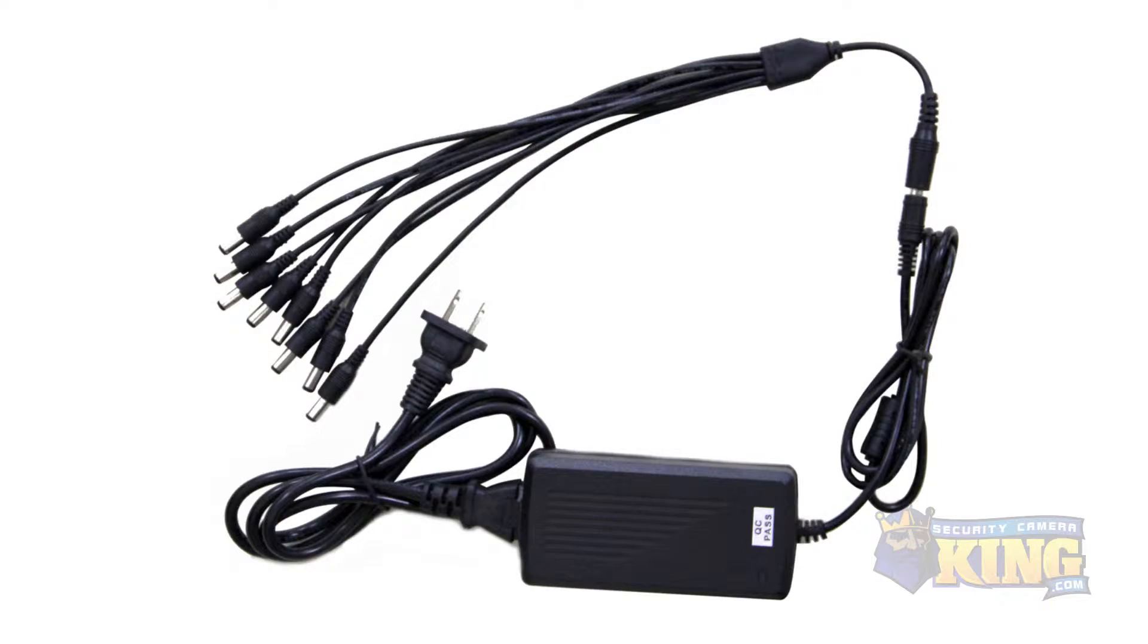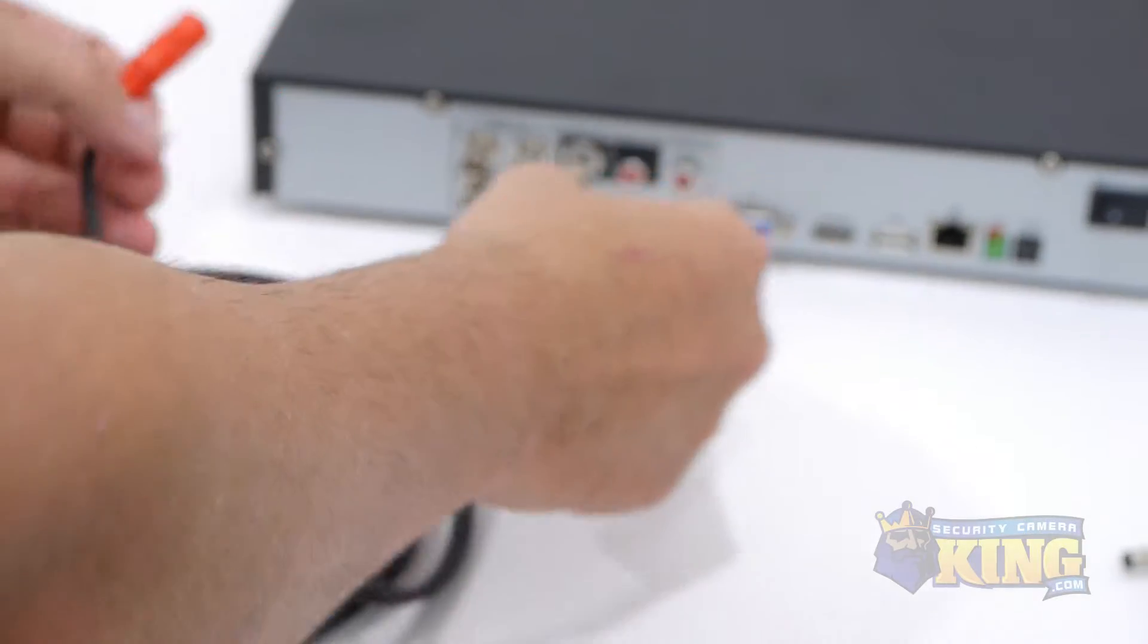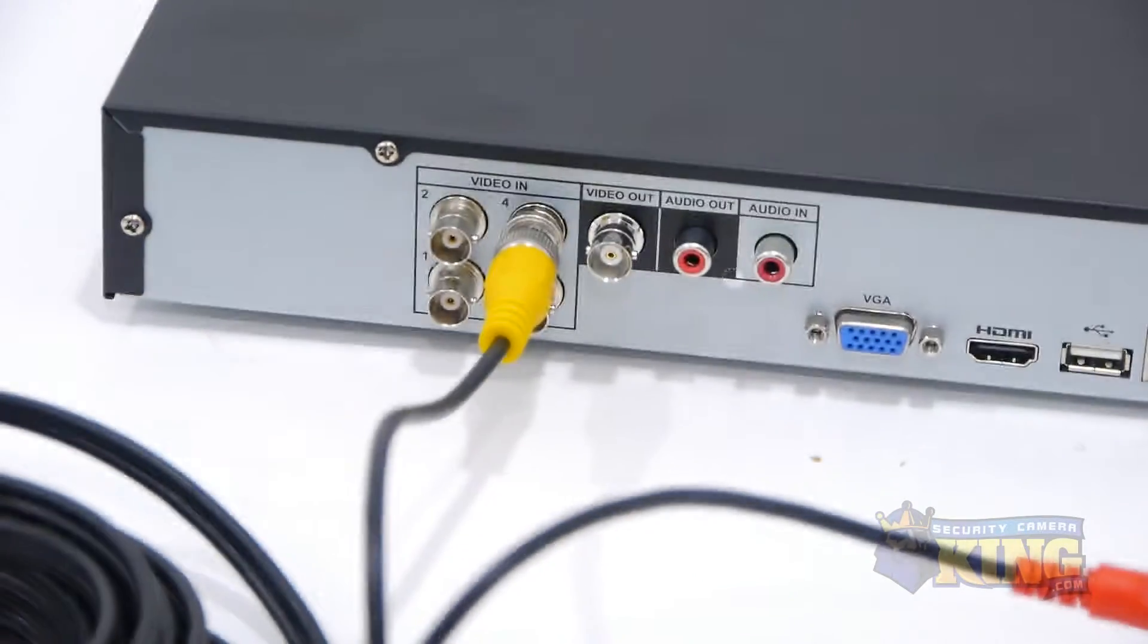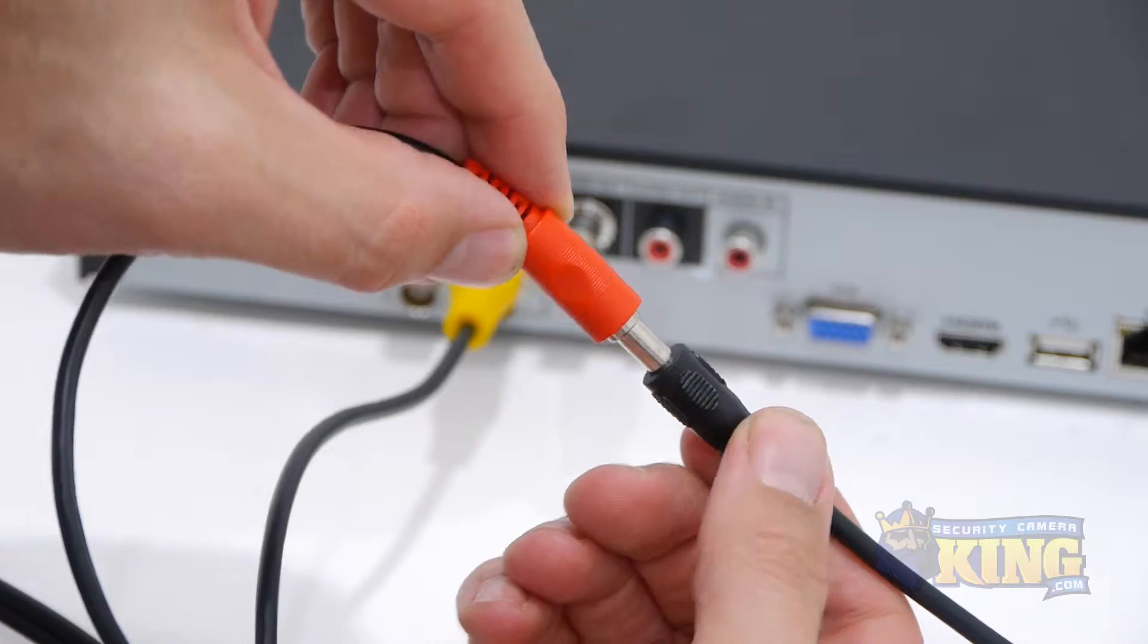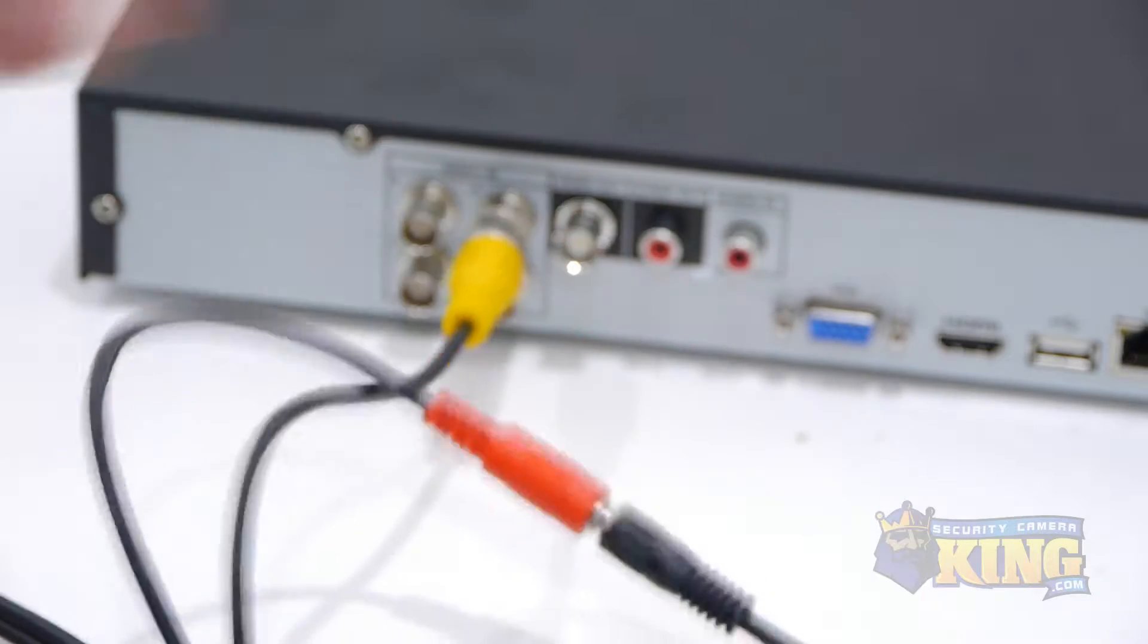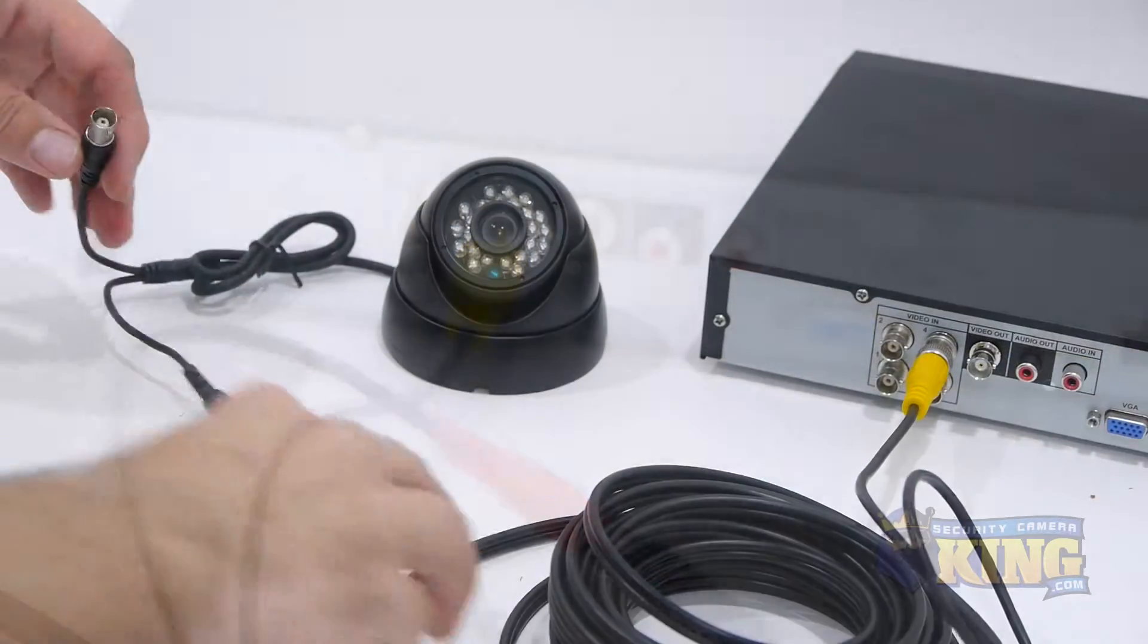We also carry a Power Mini 8 to power up to 8 cameras. Now connect the BNC connector to one of the video channels on the back of your DVR, and attach the power cable to the Power Mini 4 power supply. You'll need to do the same for the rest of your cameras.